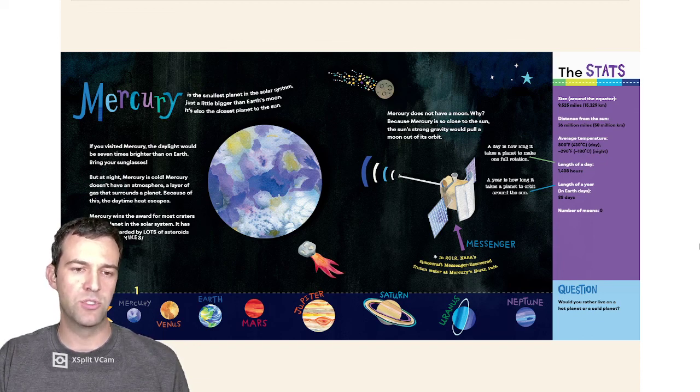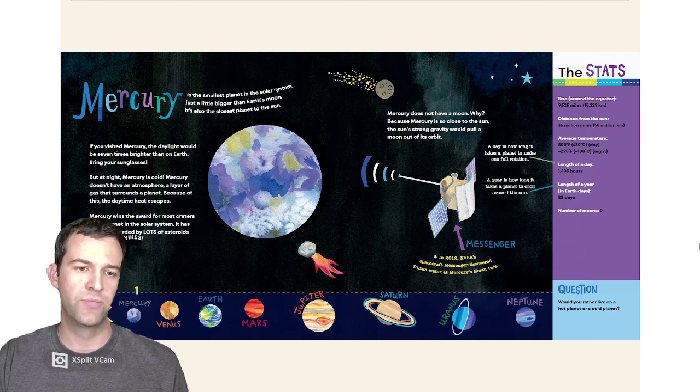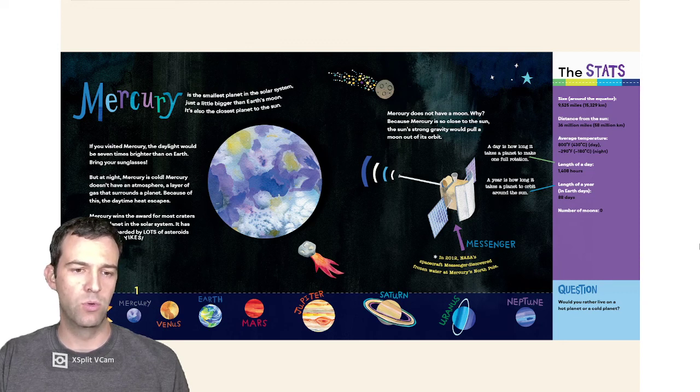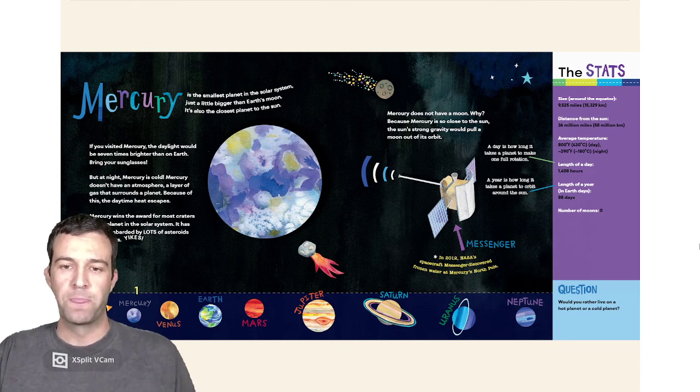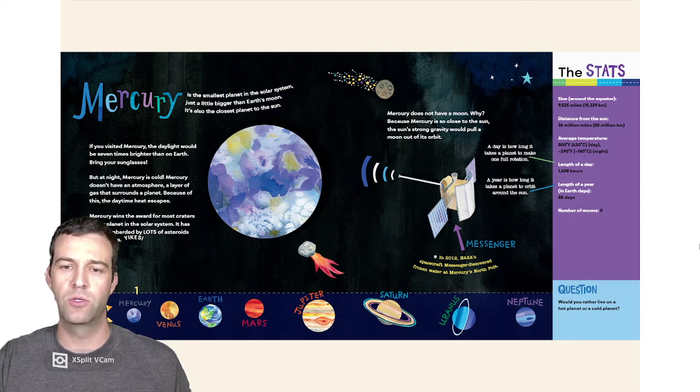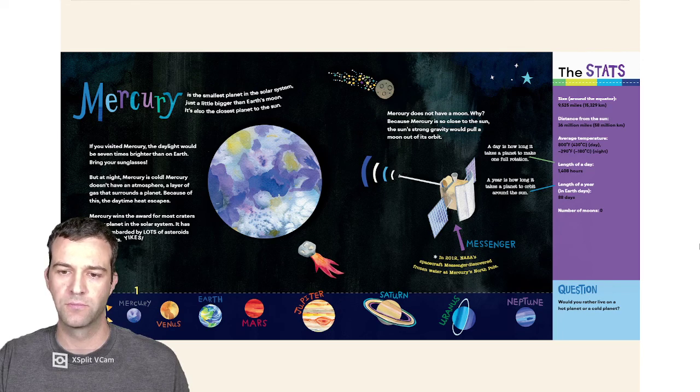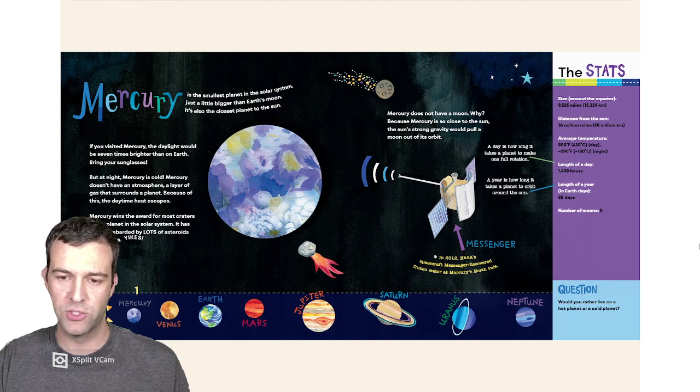Mercury doesn't have an atmosphere, a layer of gas that surrounds the planet. Because of this, daytime heat escapes. Mercury wins the award for most craters of any planet in the solar system. It has been bombarded by lots of asteroids and comets. Mercury does not have a moon. Why? Because Mercury is so close to the Sun, the Sun's strong gravity would pull a moon out of its orbit. In 2012, NASA's spacecraft Messenger discovered frozen water at Mercury's North Pole.